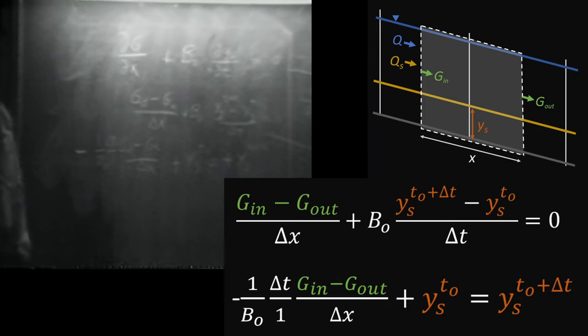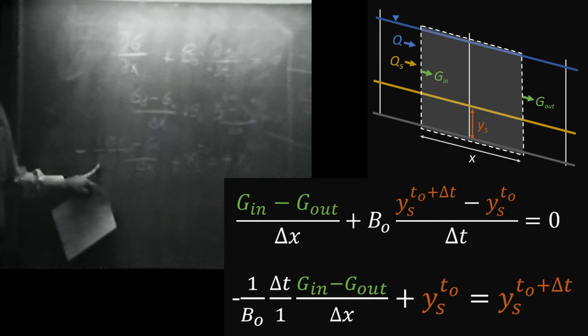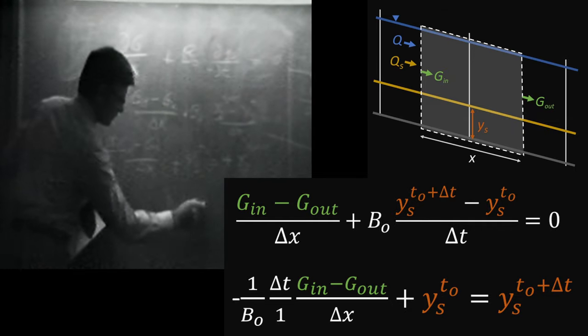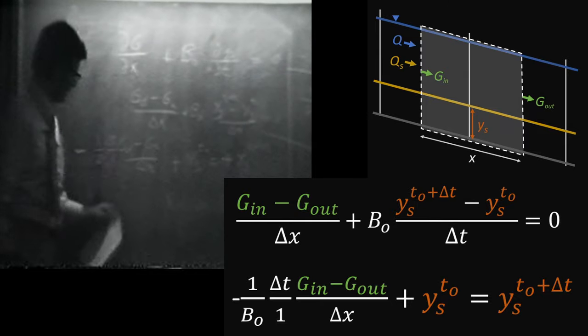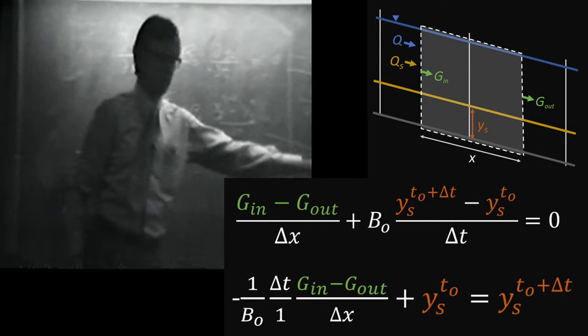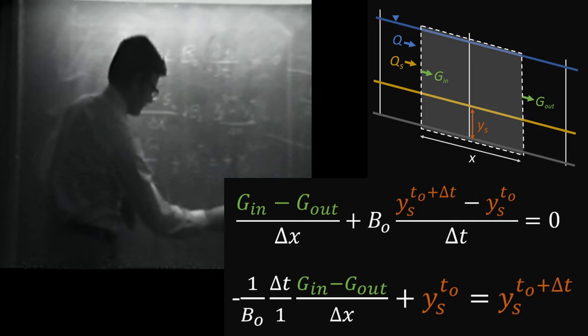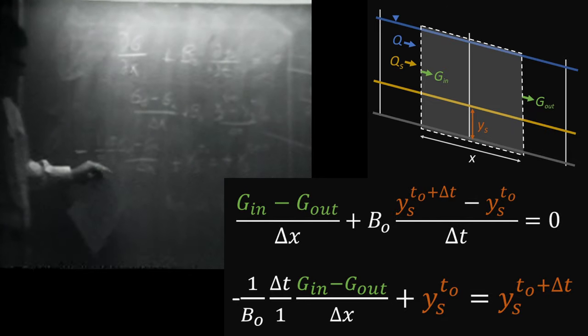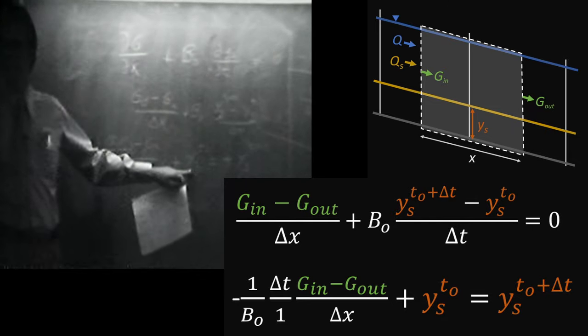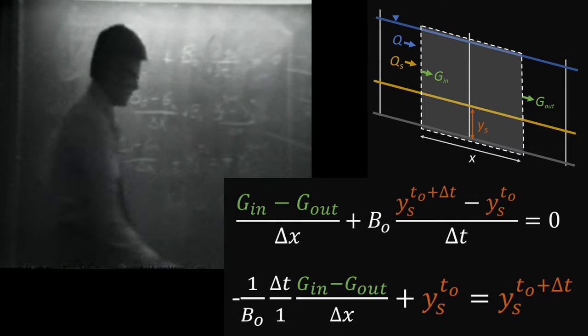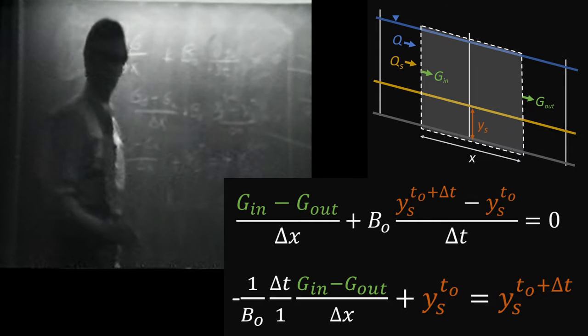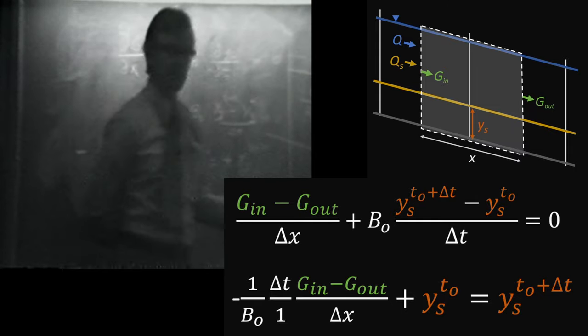What do we know about that equation? We know B sub zero. We can measure that by going to the field, or rather to cross sections, and measuring the width. We know delta X because we can assign these cross sections at whatever locations we want to, and once that's done, we can calculate delta X directly. We know Y sub S because we have some theta beta that measures the cross sections at some time zero.